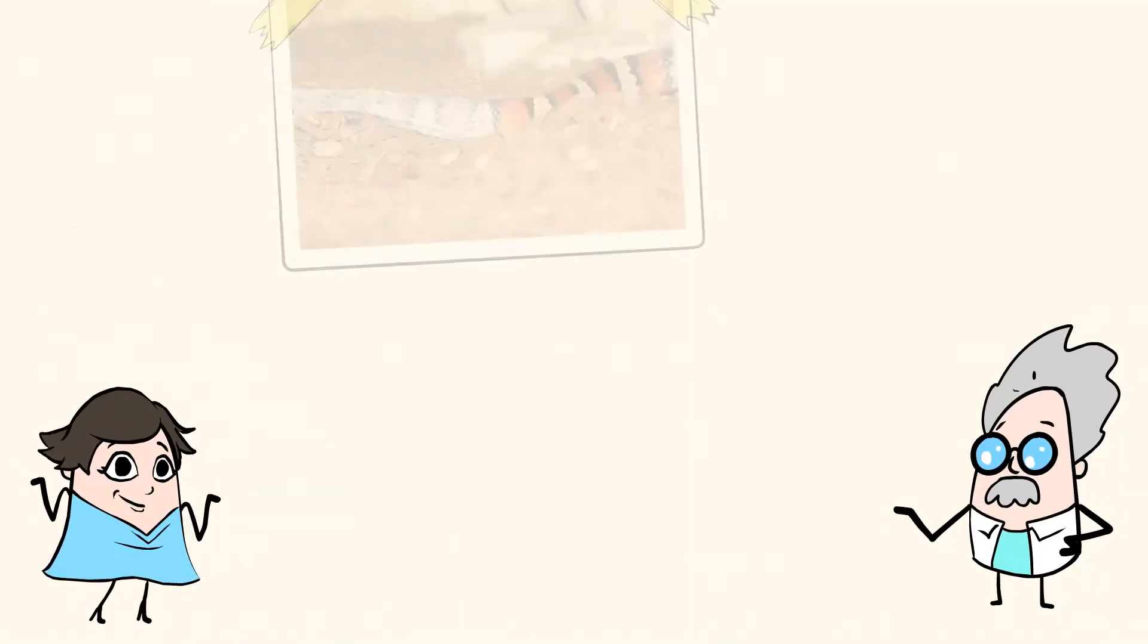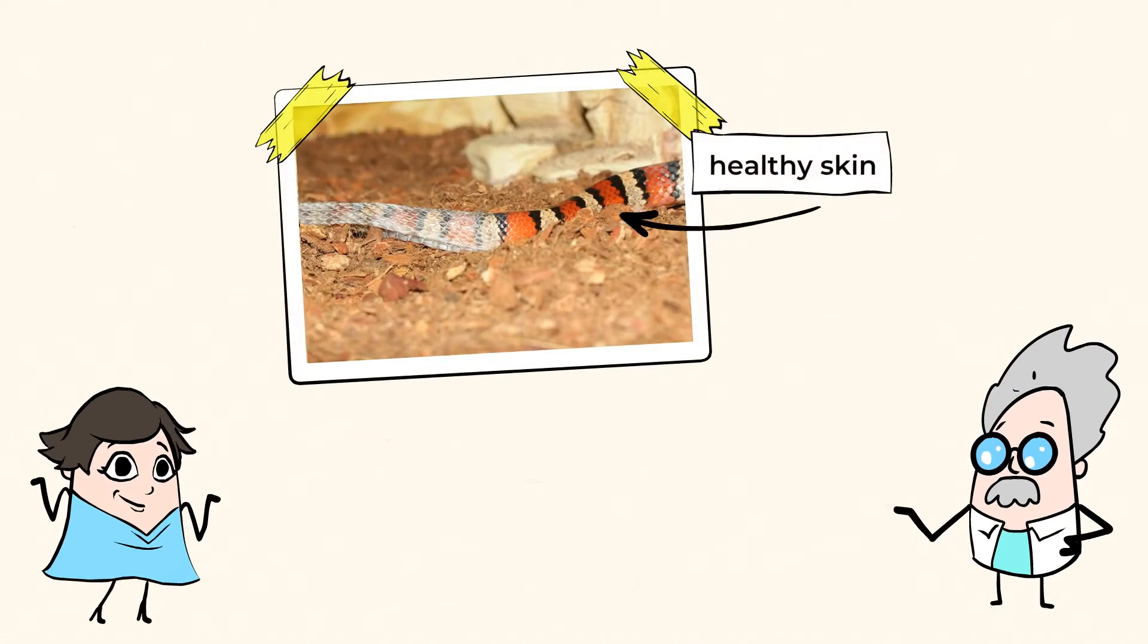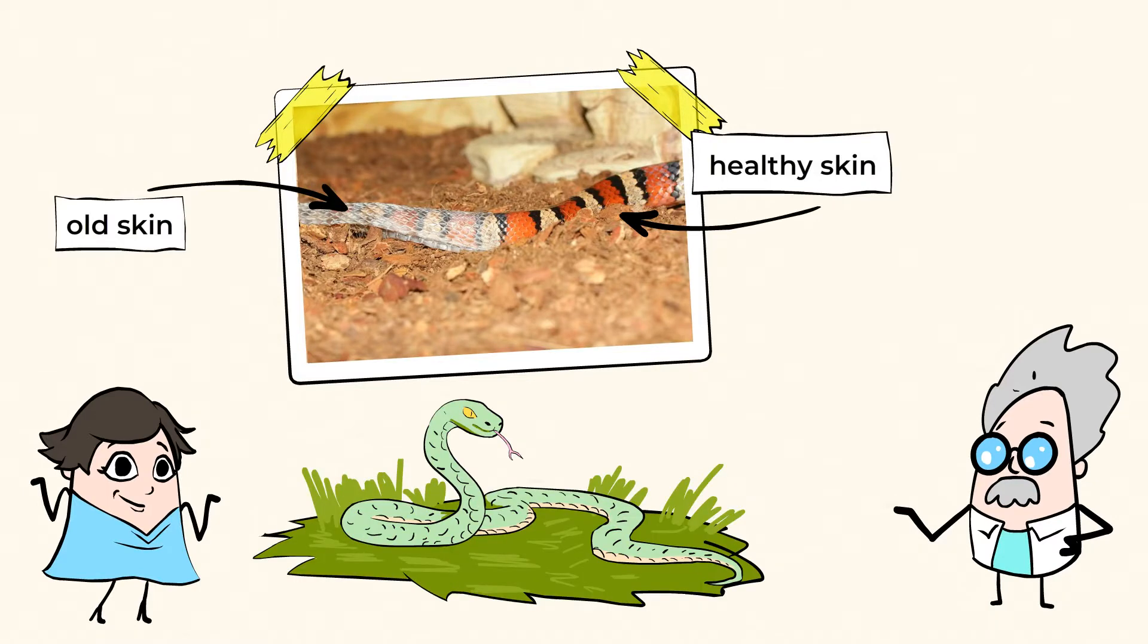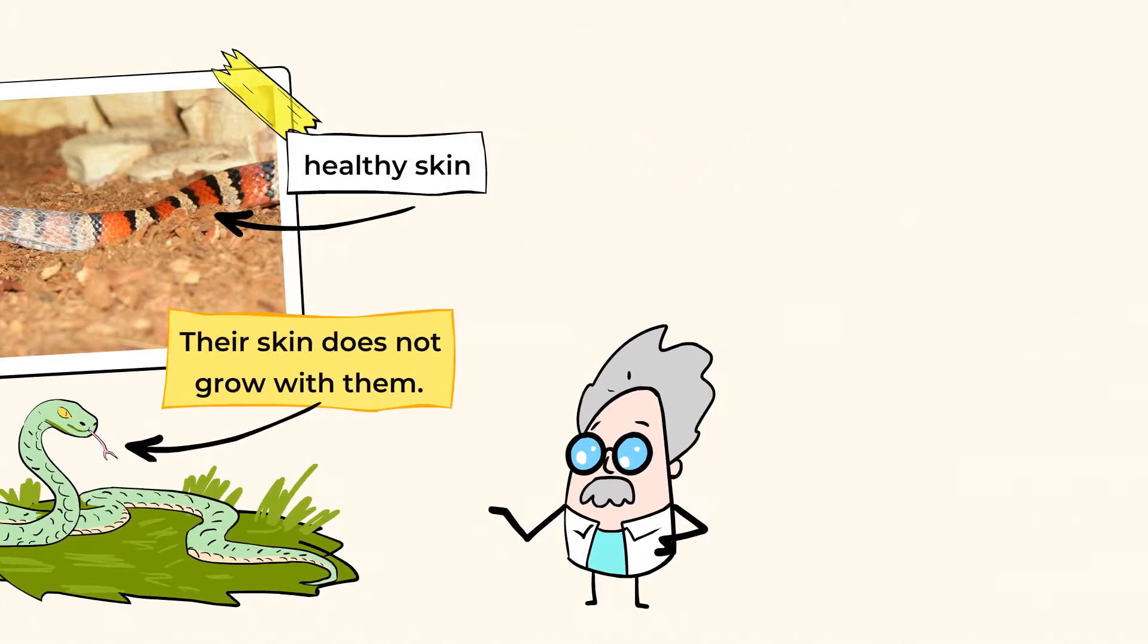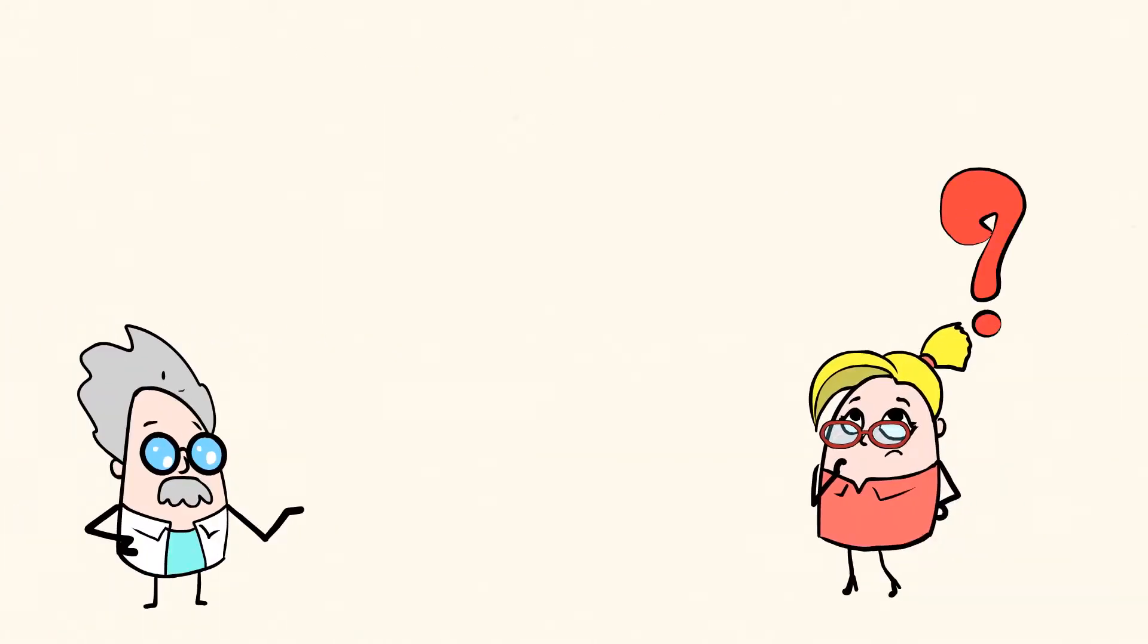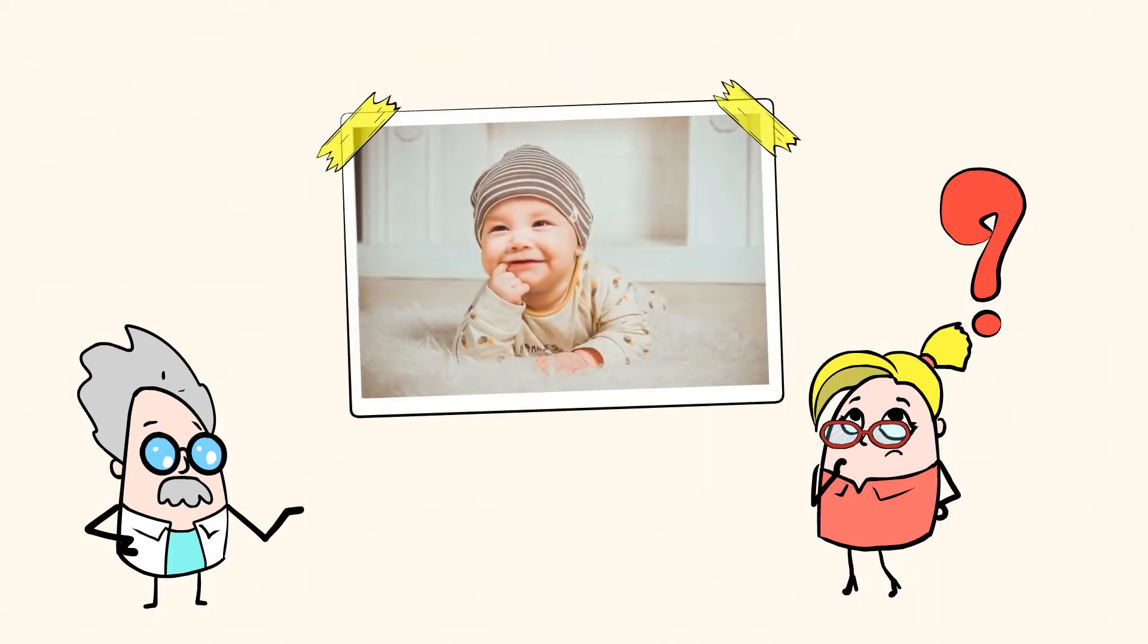When new healthy skin is created, a snake's old skin is thrown away so it starts slowly peeling back or shedding. And snakes have to shed their skin because their skin does not grow with them. Think about your skin. Do we have to shed it every few weeks when we're babies because we're getting bigger? Well, no, of course not. Our skin grows with us, but a snake's does not.